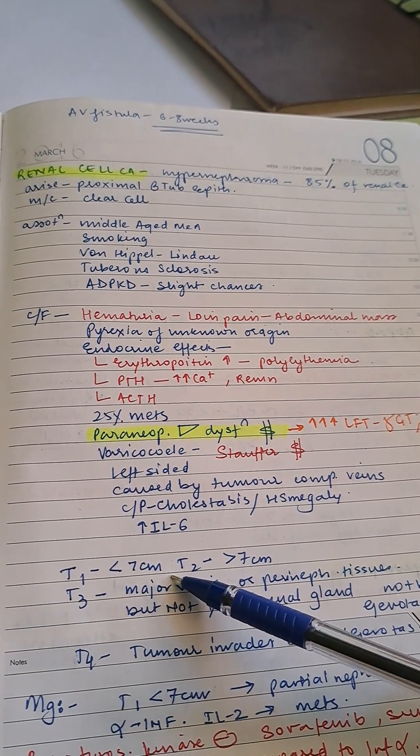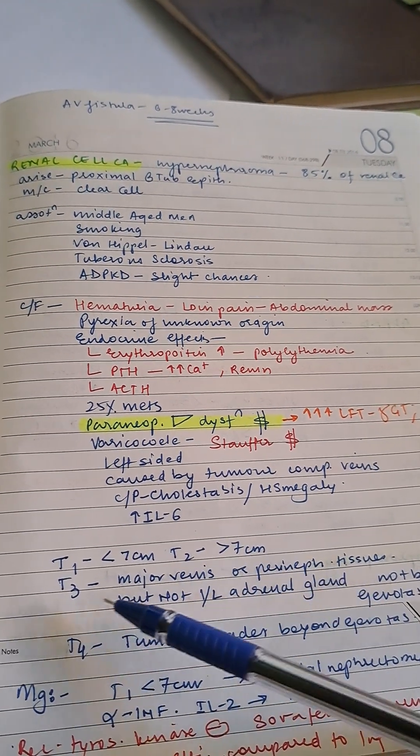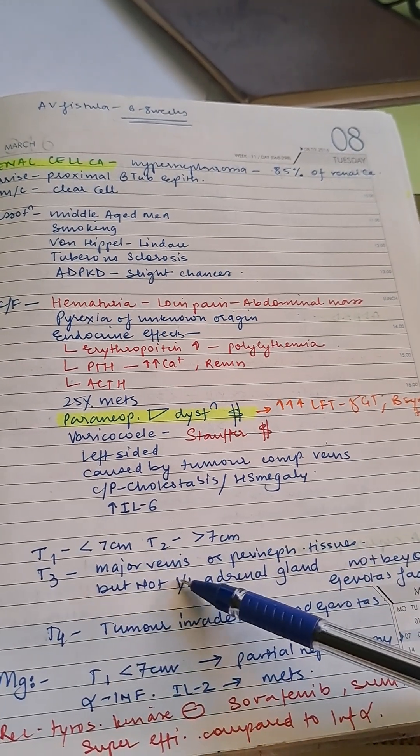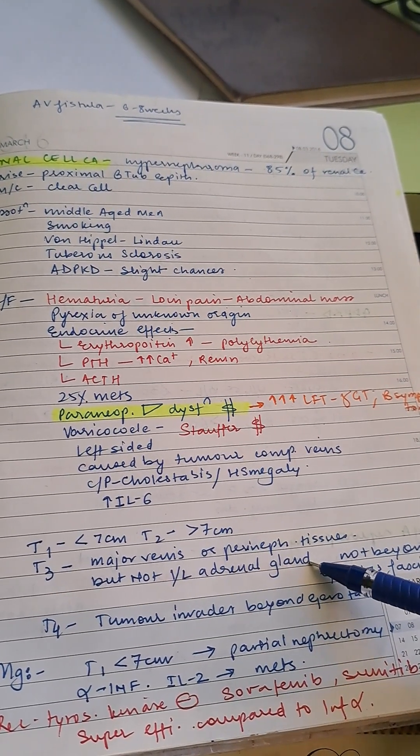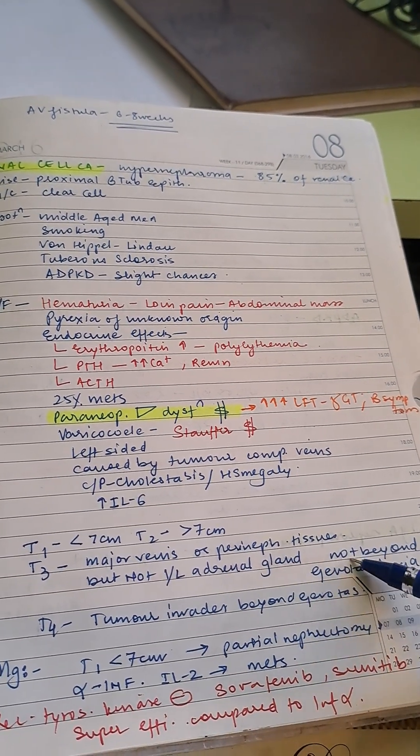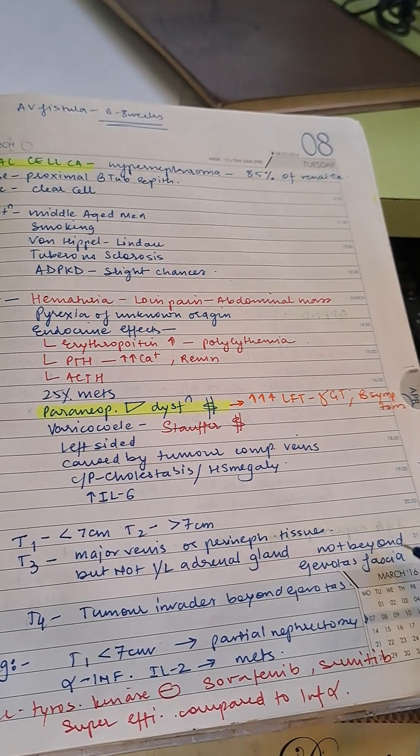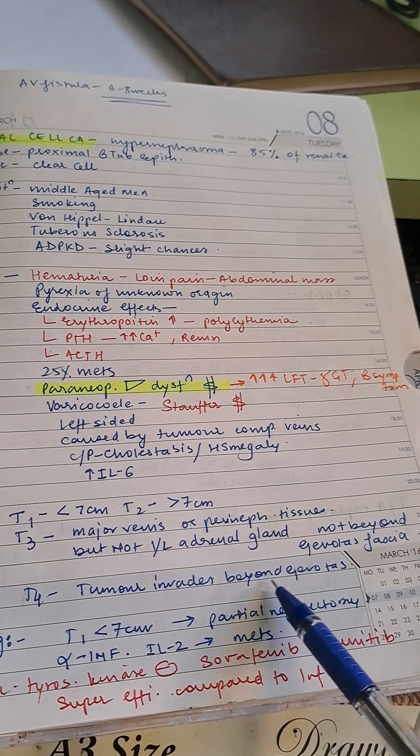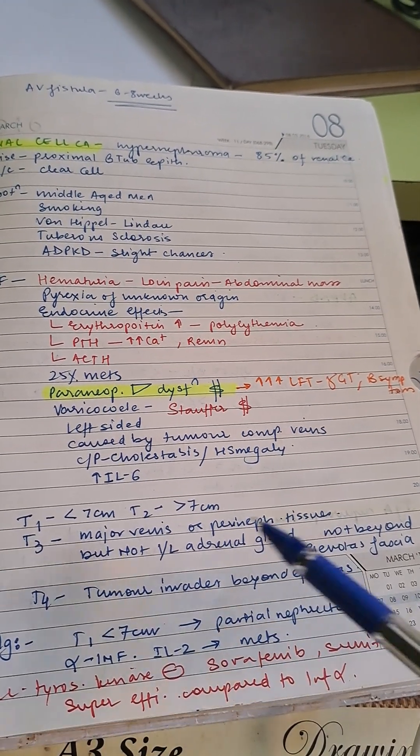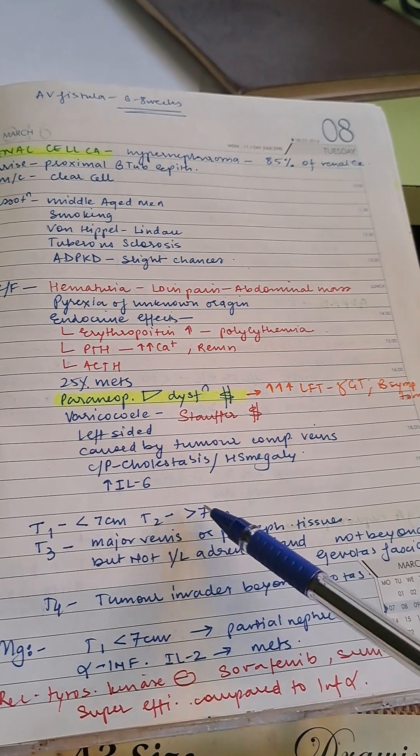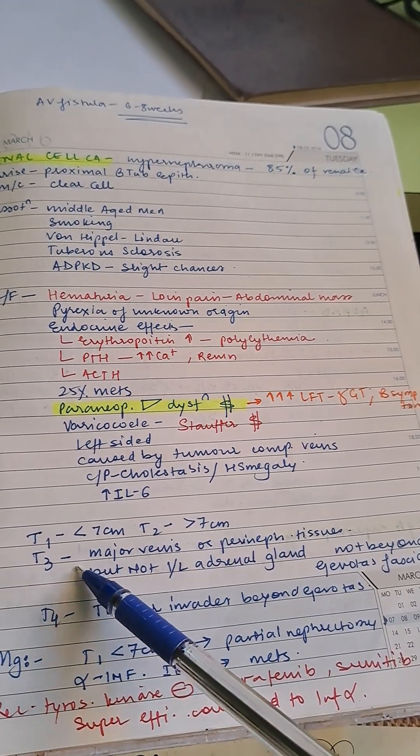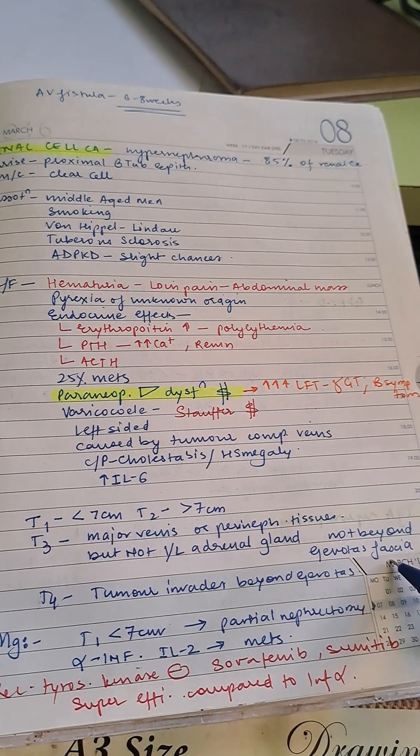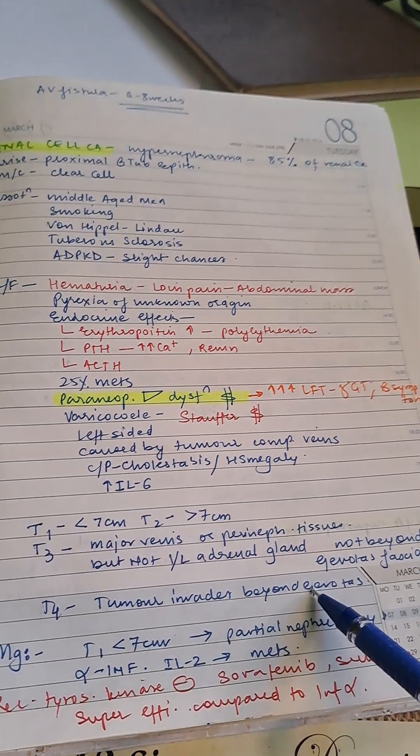Staging: T1 is less than 7 cm, T2 is more than 7 cm, T3 is major veins or peripheral tissues but not ipsilateral adrenal gland and not beyond Gerota's fascia, T4 is tumor invading beyond Gerota's fascia.